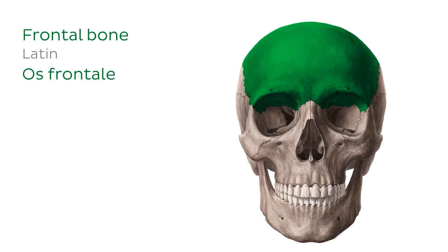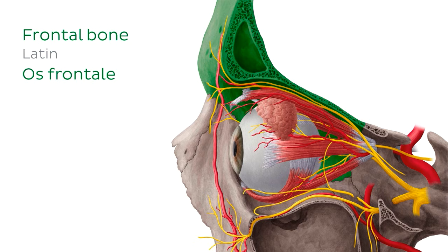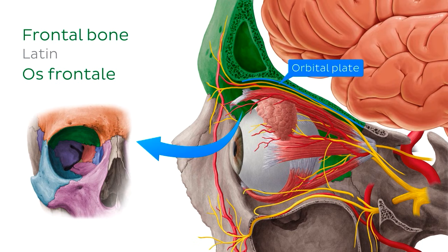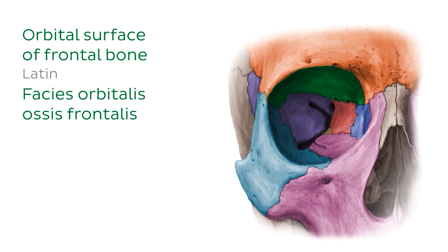The frontal bone is the large dome-shaped bone of the forehead. Since we're focusing on the orbit, we'll concentrate our attention on the inferior most portion of the frontal bone, known as its orbital or horizontal part. The majority of the orbital part of the frontal bone contributes to what's known as the orbital plate — a horizontal shelf of bone which separates the frontal lobe of the cerebrum from the orbit. Its orbital surface forms the superior surface or roof of the orbital cavity.